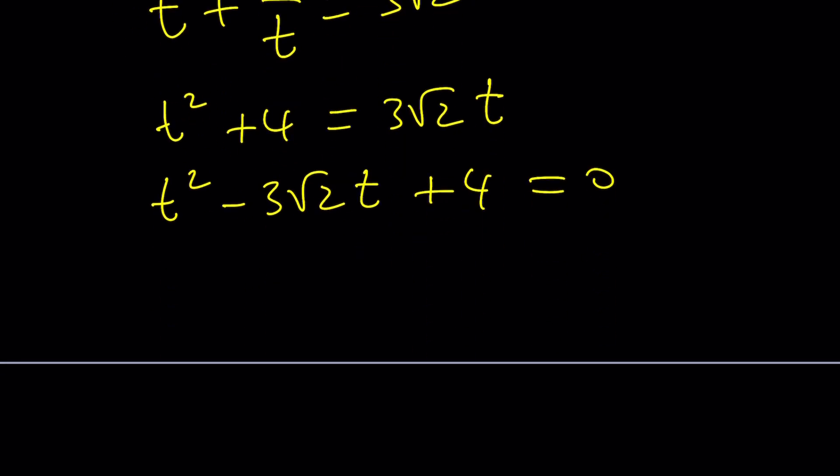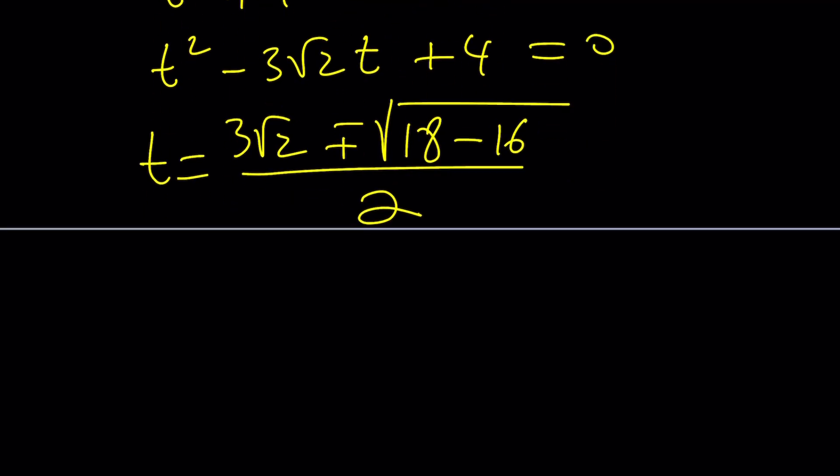This is a quadratic equation. Let's use the quadratic formula. Negative b plus minus the square root of b squared. Now how do you square 3 root 2? 9 times 2 is 18 minus 4ac. That's 16. That's going to give us the square root of 2, which is nice. Yeah, another square root of 2. That's 2.